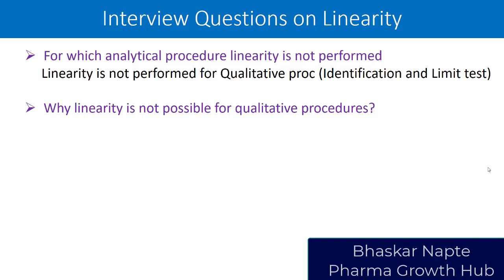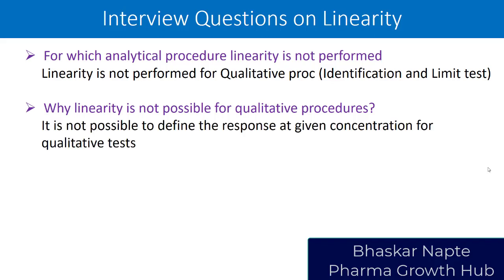That spot belongs to impurity A. Your specification or acceptance criteria is that the spot of impurity A in the test solution must be less in size than the spot observed in the standard TLC run. Here you only talk about comparison of the size of the spot — you are not able to measure the intensity of the spot in terms of its absorbance value or response. So just by observing the spot size at different concentrations, generating a response is not possible.